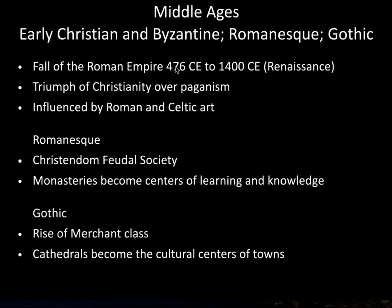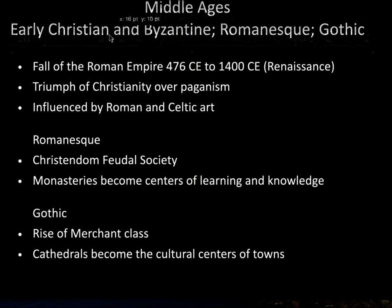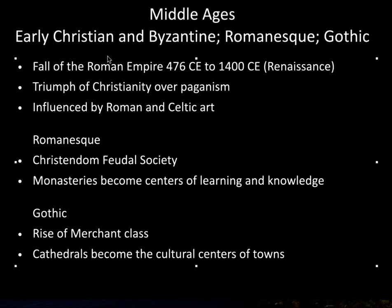The Roman Empire was divided into two parts, a western and eastern part. The western art developed following early Christian traditions, whereas the eastern part became known as the Byzantine empire. They both have different style characteristics, and they become the early part that leads into the Romanesque and later periods.